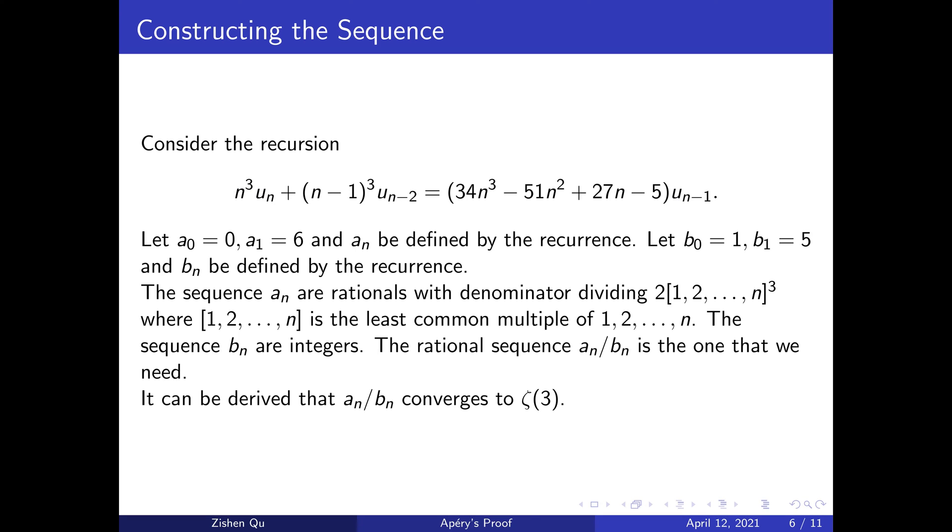We aim to construct a rational sequence as a good approximation. First, consider the recursion n³u_n + (n-1)³u_{n-2} = (34n³ - 51n² + 27n - 5)u_{n-1}.